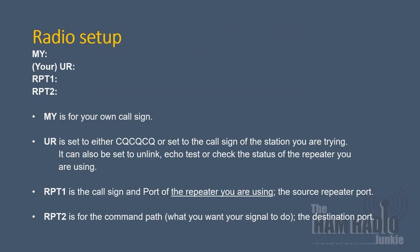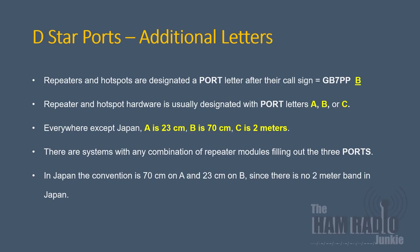So if you've got one of these, let's show you how to program it. You need to go into your menu setting and find the following four options: My, Your (which is 'You Are'), RPT1, and RPT2. In My, enter your own callsign. This will be transmitted when you key up and identify you on the network. We'll discuss Your, RPT1, and RPT2 in a minute.